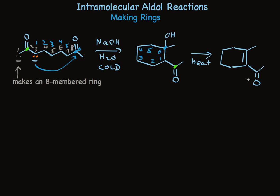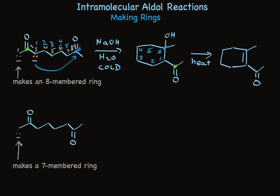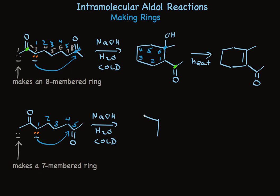We can make five-membered rings like this too. Now we have one less methylene group separating the two carbonyl groups. If we remove the alpha proton on the methyl group, we make an enolate. But if that were to add to the carbonyl group, it would make a seven-membered ring, also not favored. But as we count the carbons at the other alpha position, we see that a five-membered ring would form during nucleophilic addition to that ketone carbonyl. Five is one of the magic ring sizes.